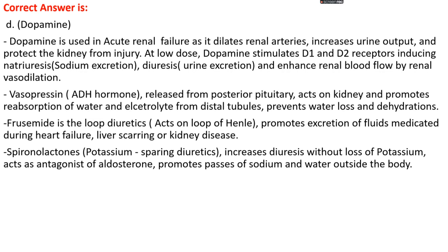Vasopressin, known as ADH hormone, is released from the posterior pituitary and acts on the kidney to promote reabsorption of water and electrolytes from distal tubules, preventing water loss and dehydration. Furosemide is a loop diuretic that acts on the loop of Henle and promotes excretion of fluids, mainly used during heart failure, liver cirrhosis, or kidney disease. Spironolactone is a potassium-sparing diuretic that increases diuresis without loss of potassium; it acts as an aldosterone antagonist, promoting excretion of sodium and water.